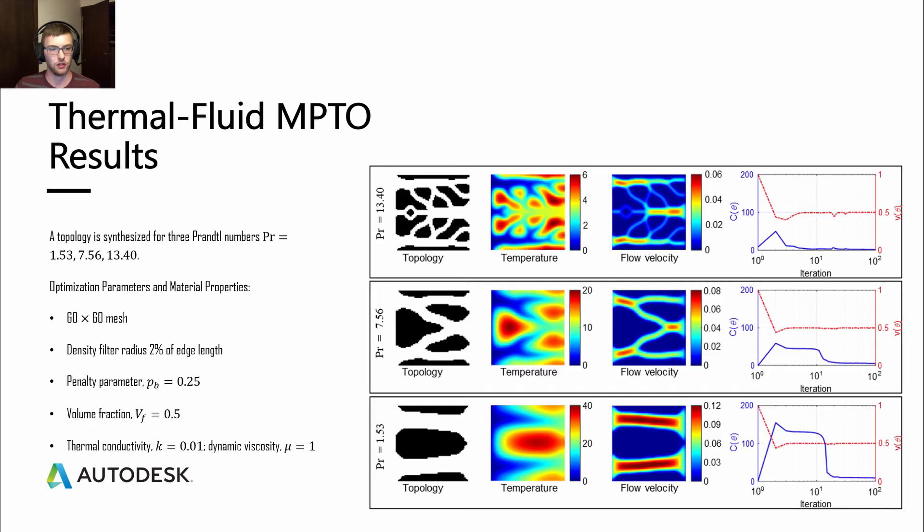Let's see the results of this heat exchanger design. If we synthesize and run it for three different Prandtl numbers, and these correspond to a couple of different common fluids, we will see the following topologies that we have here. These were done for a 60 by 60 mesh. The density filter radius that we used in the optimization was two percent of that edge length. The penalty parameter is 0.25. The volume fraction is 0.5. And then thermal conductivity is set to 0.01. The dynamic viscosity is set to one.